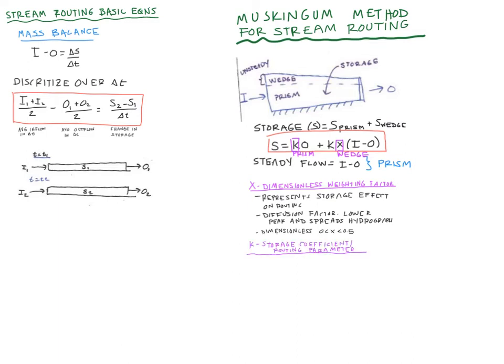K is our storage coefficient or routing parameter. This has units of time. This accounts for the travel time of the peak through the piece of storage. In our example at the beginning, it would be from the outflow of that first watershed to the outflow of all of them. This is a function of the reach length and size of the flood.